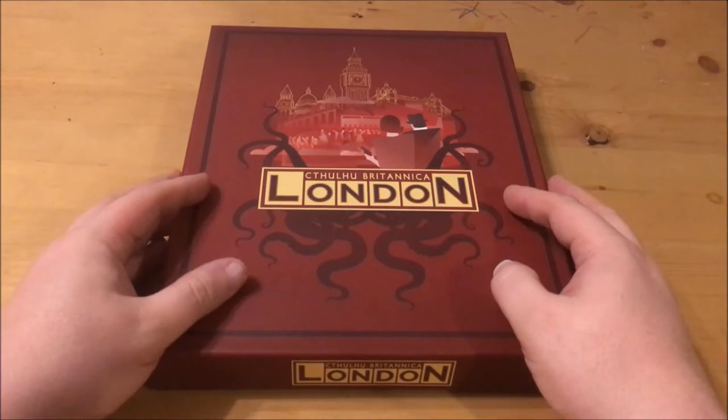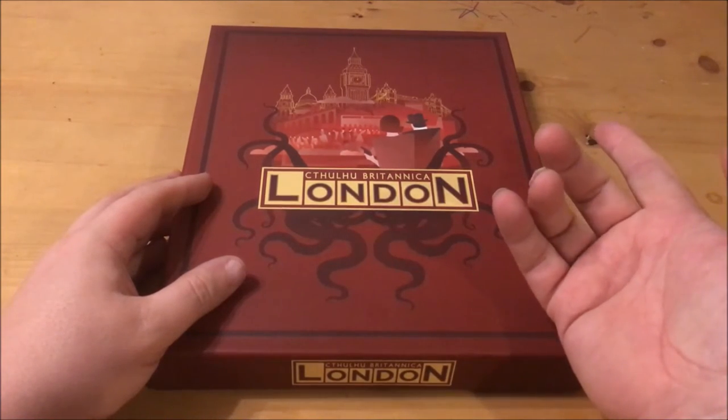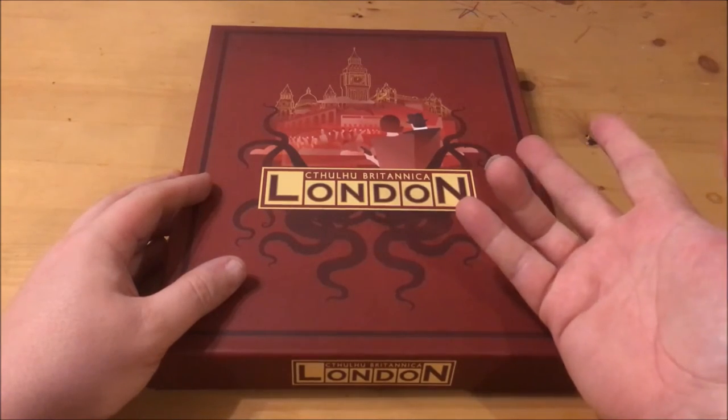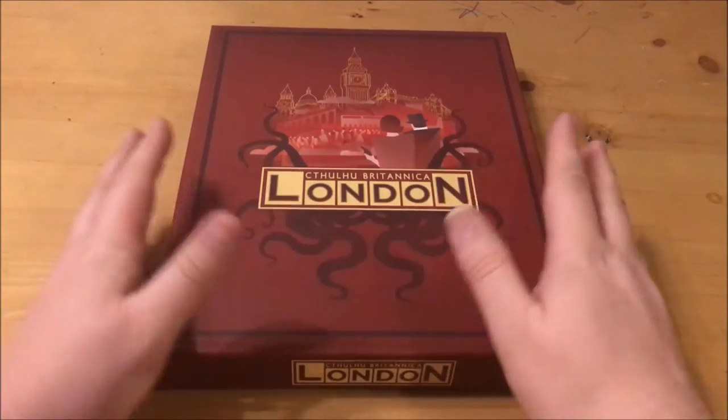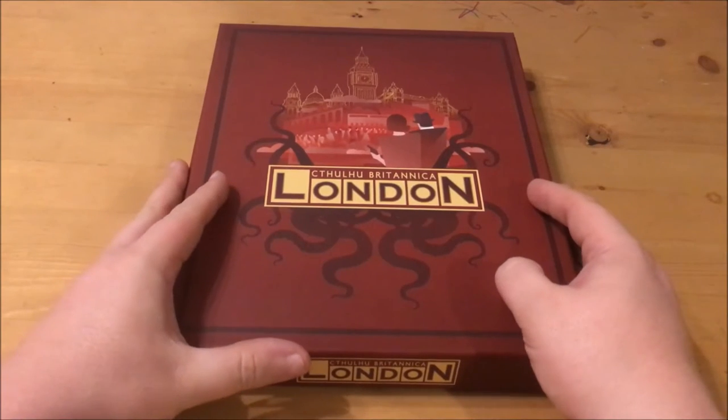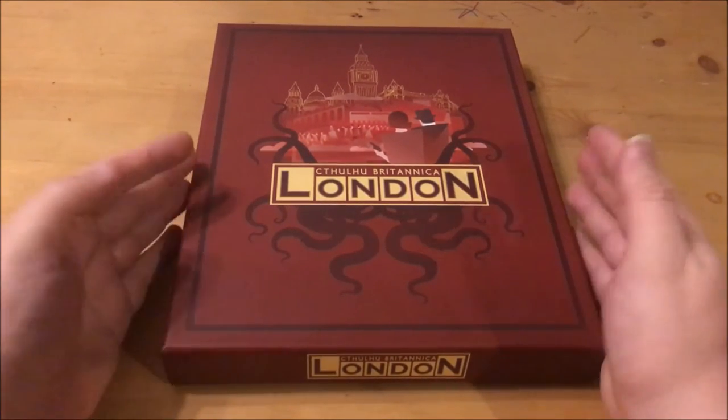There have been other attempts at bringing London into the mythos fold, Games Workshop's Green and Pleasant Land, and Chaosium the London Guidebook for example. But simply put, neither of these hold a candle to Cthulhu Britannica London, in terms of content or presentation.